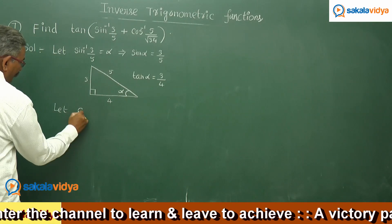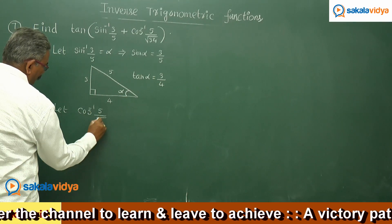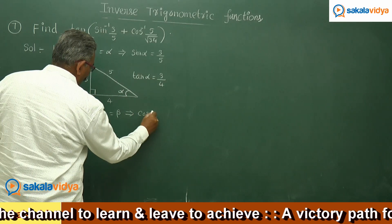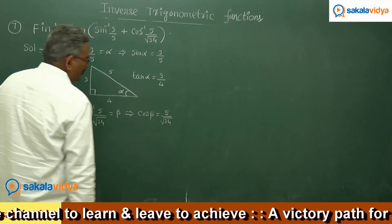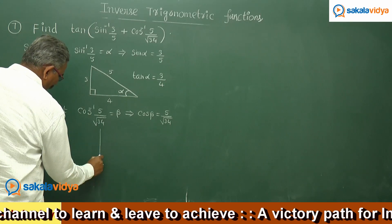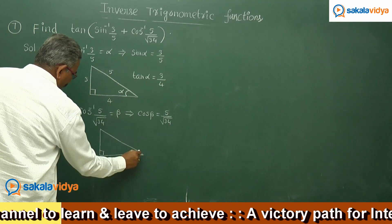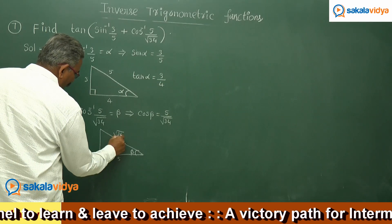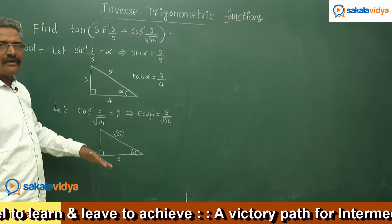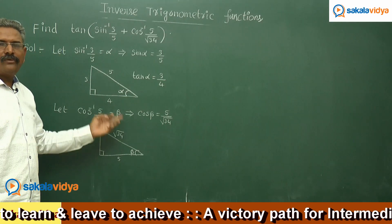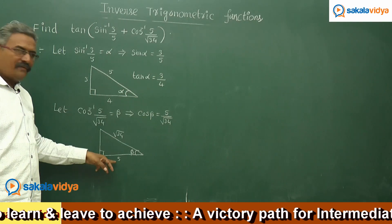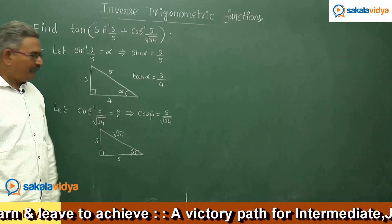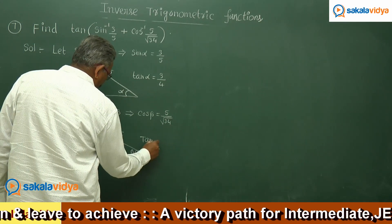Now let cos inverse 5 by root 34 equals to beta, so cos beta equals 5 by root 34. Let us consider one more right angle triangle. This angle is beta; as per the definition of cosine, the adjacent side is 5 and the hypotenuse is root 34. The opposite side is found as root 34 squared minus 5 squared equals 34 minus 25 equals 9, so the side is 3. Therefore, tan beta equals 3 by 5.